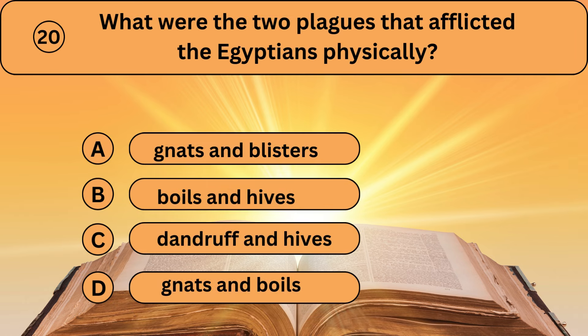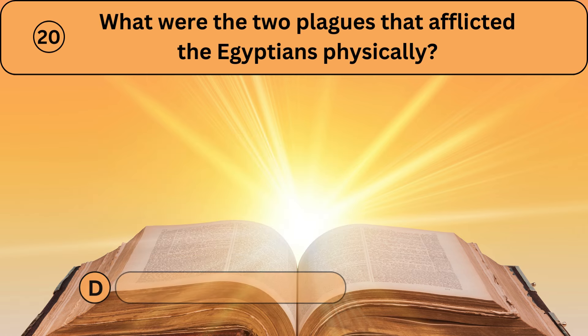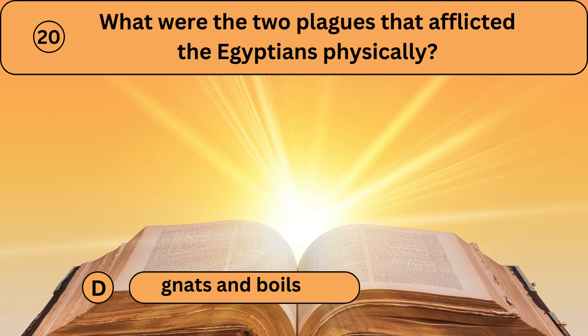Question twenty. What were the two plagues that afflicted the Egyptians physically? A. Gnats and blisters. B. Boils and hives. C. Dandruff and hives. D. Gnats and boils. Gnats and boils is the right answer.